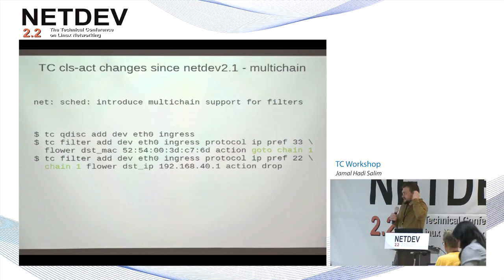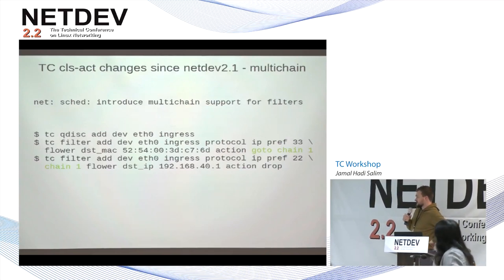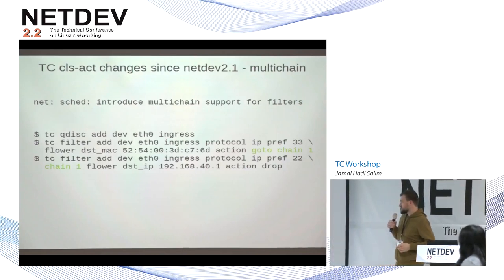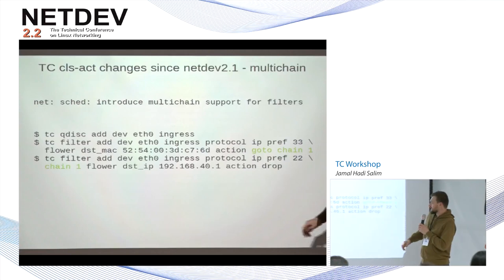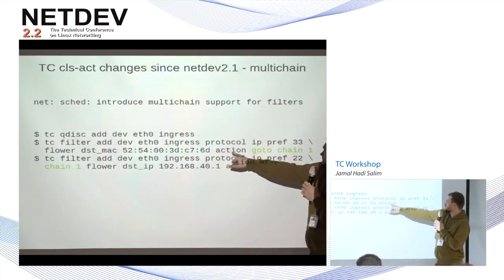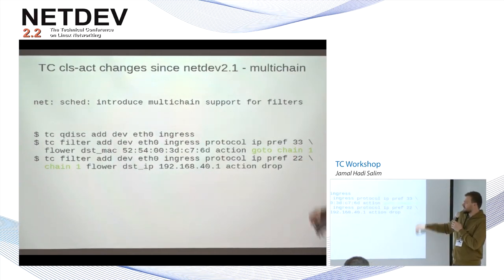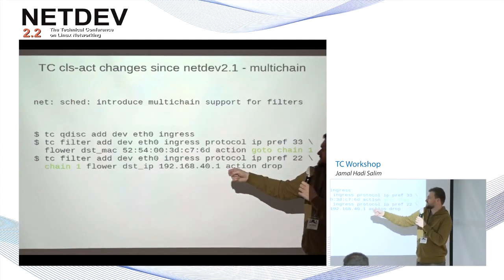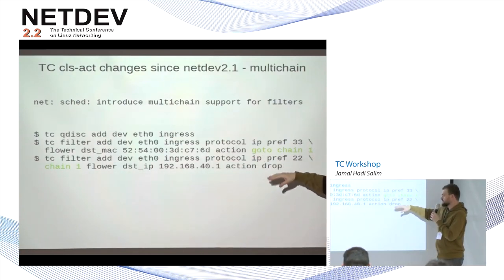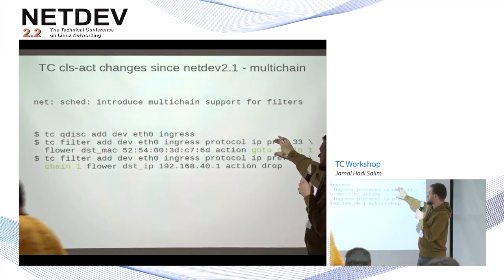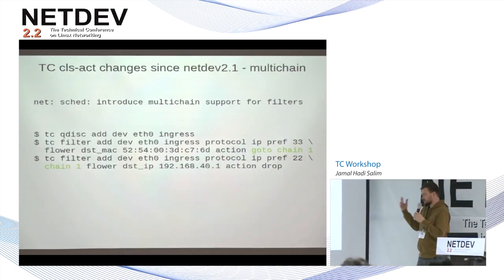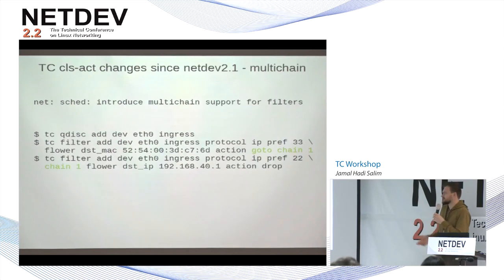The biggest change in this subsystem since last time is support for multichains. You can see examples of how to do that. In this example, I create an ingress QDisc, insert a flower filter into it, and the action is 'go to chain one.' Whenever the filter is hit, the action redirects to chain one. Then I can insert filters into chain one. The limit is U32 for the chain, so it's basically unlimited.